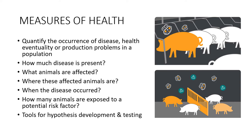So what are these measures of health? They enable the quantification of occurrence of disease, health eventualities, or production problems in a population. It basically aims to answer how much disease is present in a certain population, which animals are affected, or if there are specific types of animals more prone to developing the disease, where these animals are, when this disease occurs, and how many animals are exposed to potential risk factors — and what are these potential risk factors?